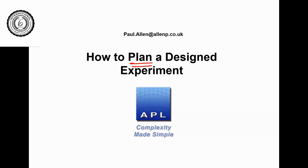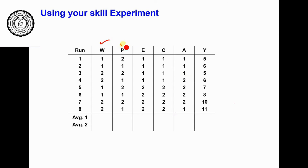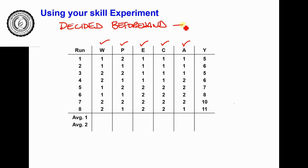Here's an example: someone's got five variables they'd like to understand, and what they've done is sat down and planned eight tests beforehand. Because they planned them beforehand, they say this was a designed experiment — that they used their skill to decide which tests it would be best to do.